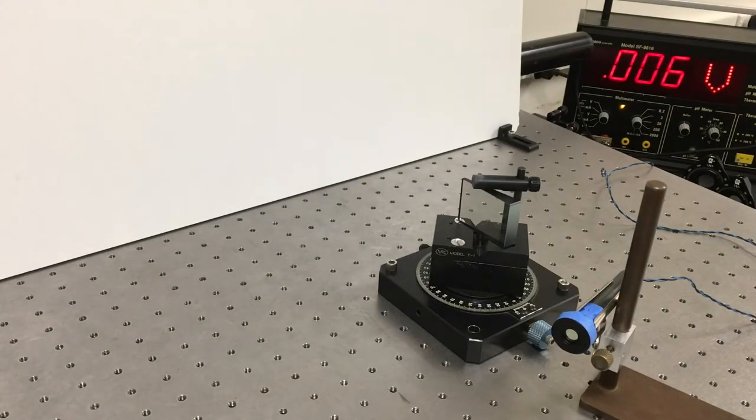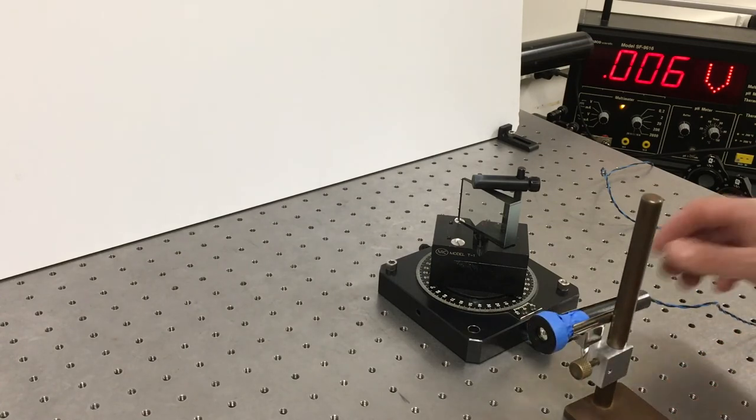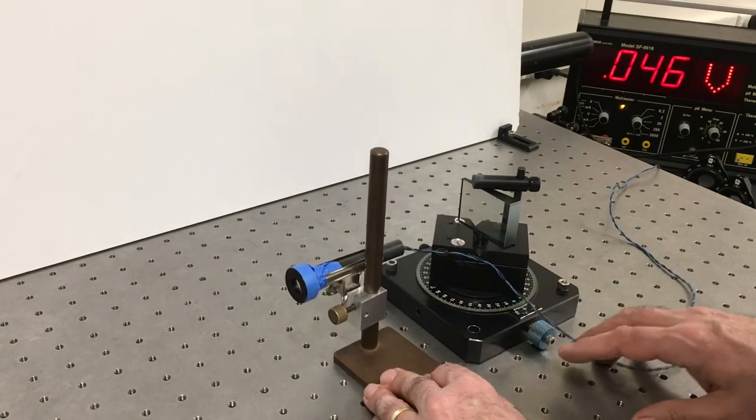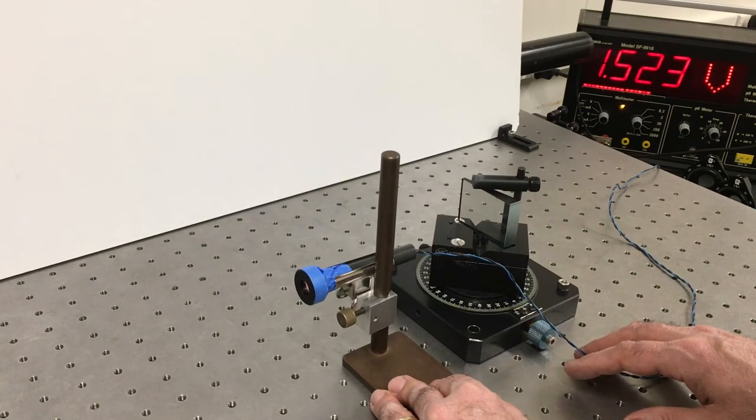Same setup as last time, except now we're sending in horizontally polarized light. Let's take some more data. Our incident intensity is now that.